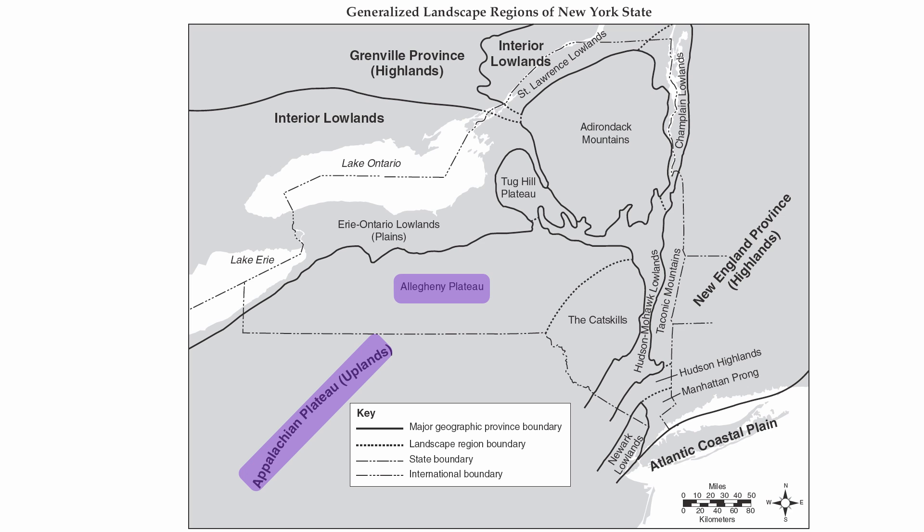A special section of the Allegheny Plateau is what we call the Catskills. The Catskills are not true mountains because they're made up of sedimentary rock. You also have the Tug Hill Plateau as well.